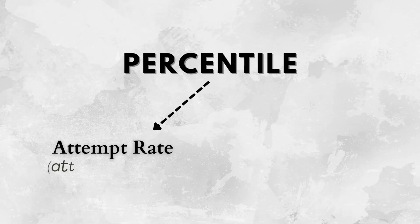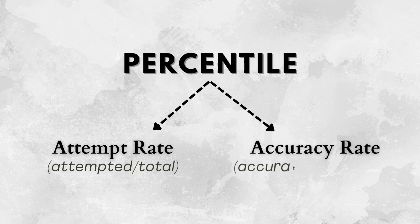Before taking a mock test, there are 2-3 parameters that you should write down in one place, which you will use to evaluate your mock. Generally people think the parameter has to be percentile. Actually, your percentile is the result of your attempt rate — the number of questions you attempted out of the total — and your accuracy rate — the number of questions you got right out of the total you attempted. If you track just these two parameters, you will actually be able to improve your mock scores by a significant amount.